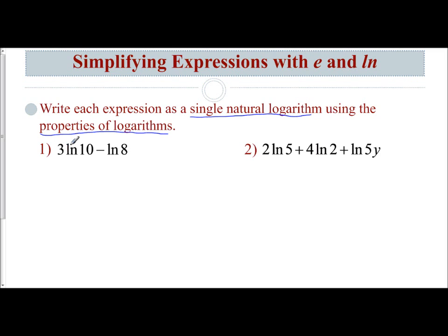We have 3 times the natural log of 10 minus the natural log of 8. I see 3 times the natural log — I am multiplying to a log, which is like multiplying to an exponent. That's our power rule. I then notice that I am subtracting my logs, much like subtracting exponents. That is the quotient rule.